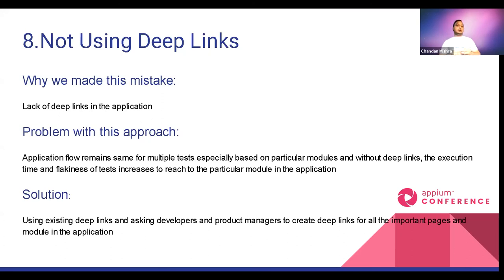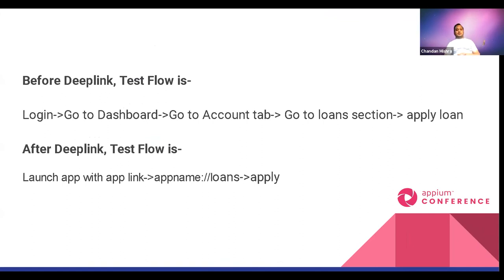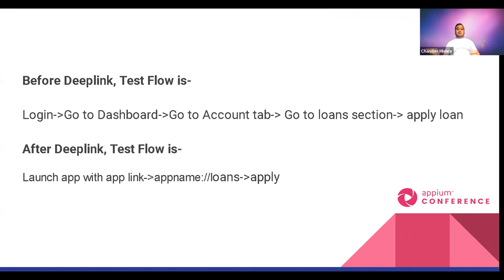The seventh and biggest impact optimization was using deep links. Without deep links, a test flow requires: login, go to dashboard, go to account tab, go to loans section, then apply. With deep links, you directly launch the app with a URL like `appname://loan/apply` and land on that page immediately, saving five to seven minutes spent on login and navigation per test. Work with your developers to create deep links — they already use them for marketing.